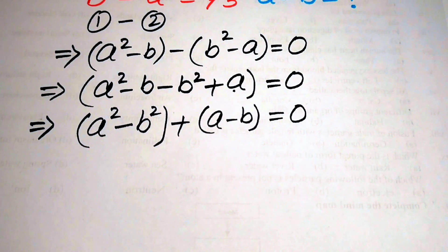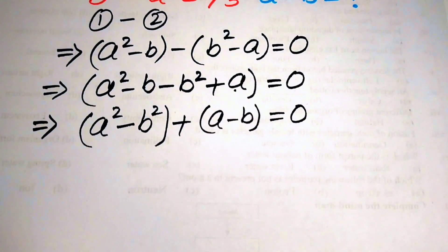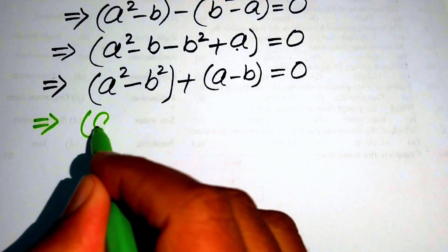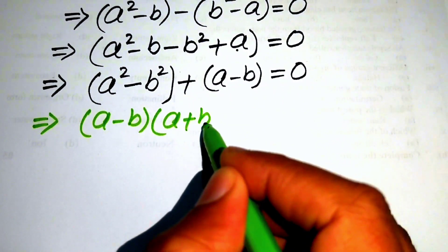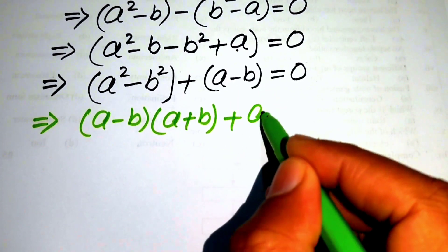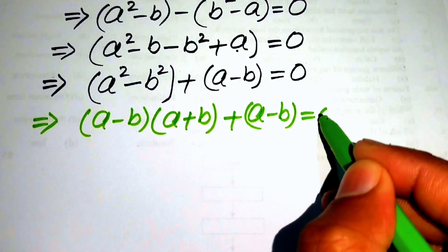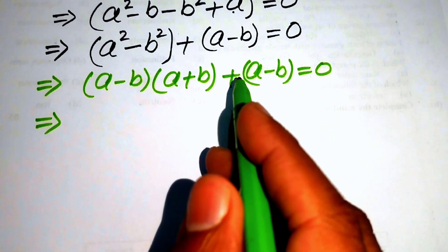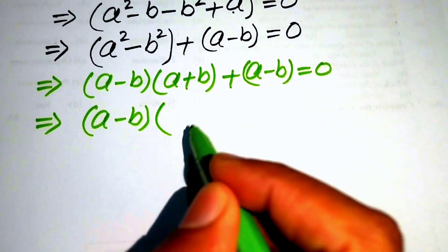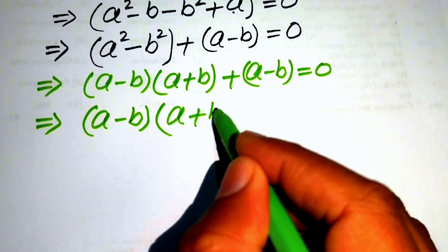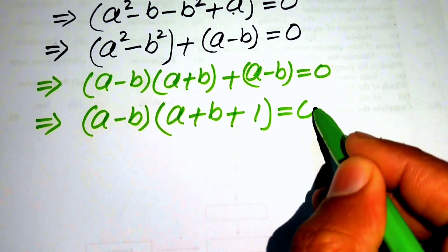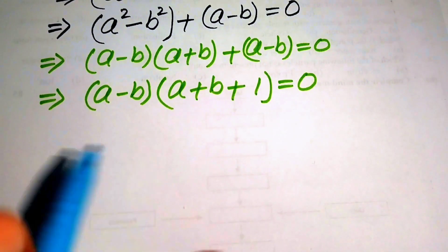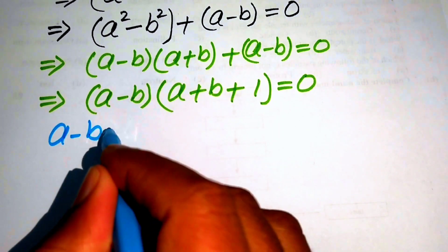Since we have a squared minus b squared, we apply the difference of squares identity: a squared minus b squared equals (a minus b)(a plus b). So our equation becomes (a minus b)(a plus b) plus (a minus b) equals zero. We factor out the common factor (a minus b) to get: (a minus b)(a plus b + 1) equals zero.